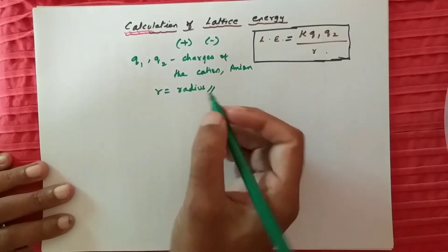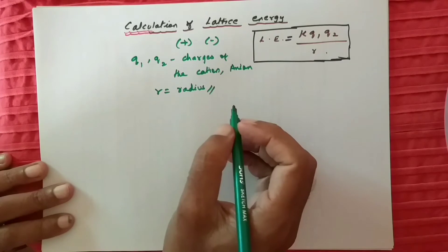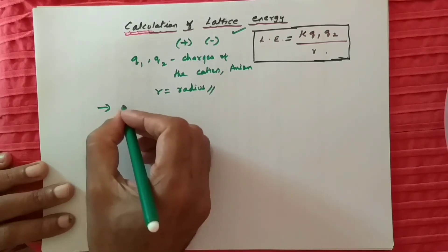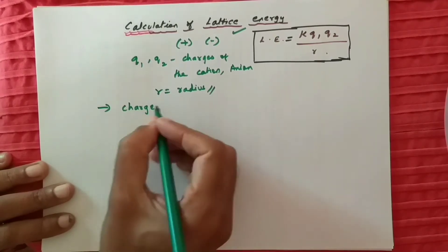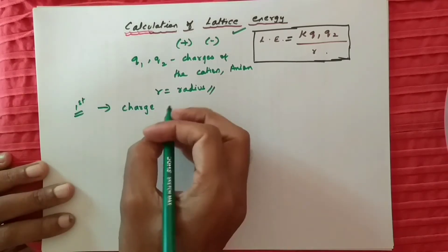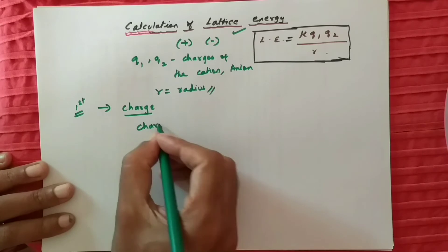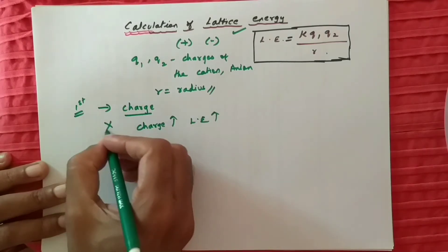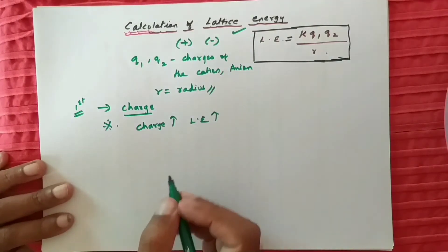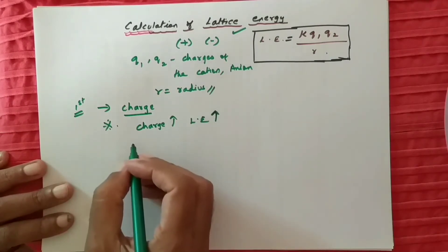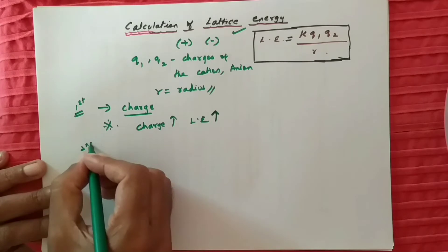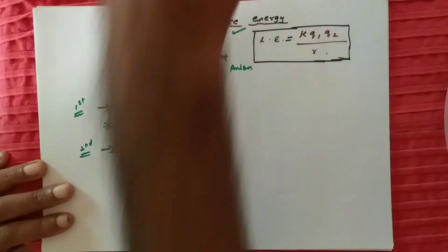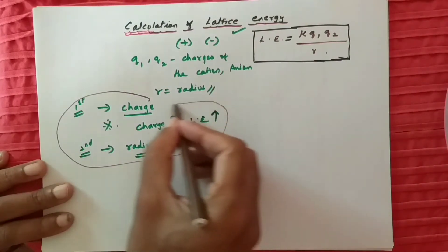Let me give some examples. Before that, please remember: while calculating lattice energy, first you have to take charge into account — that is the first preference. Greater the charge, greater the lattice energy. The second factor to consider is the radius. You have to take into account these two things to calculate the lattice energy.